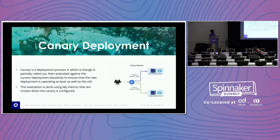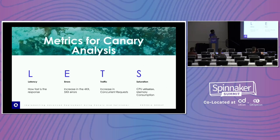The most used in the market is canary deployment. Rather than completely shifting the traffic, we just shift 5% or less percentage. Here are the metrics we can use for analysis: latency, errors, traffic, and saturation. Based on these metrics, we analyze whether the deployment we are doing is a good deployment or a bad deployment.